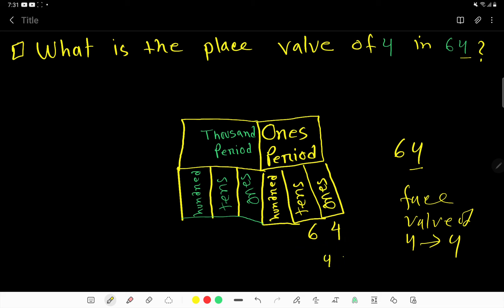The position is ones column, so 4 ones is the place value. So the place value of 4 is 4 ones, that is 4 times 1, that is 4. That is the place value of 4 equals 4.